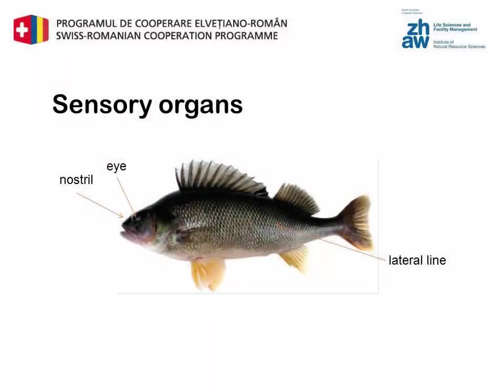Fish perceive their environment with different senses; the picture shows a fish's sensory organs. We have only outlined the most important ones. The lateral line registers changes in water pressure. When swimming, pressure waves are reflected off of obstacles. This gives the fish a kind of spatial perception, similar to an echo sounder.